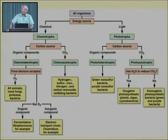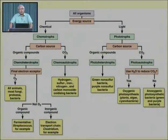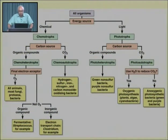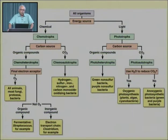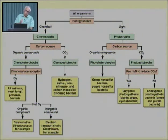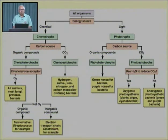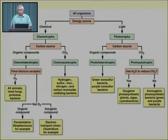The other group of organisms requires inorganic compounds as the final electron acceptor. An example is the Clostridium group of organisms, where the electron transport chain uses a final electron acceptor other than oxygen. This provides a brief classification of chemotrophic organisms.